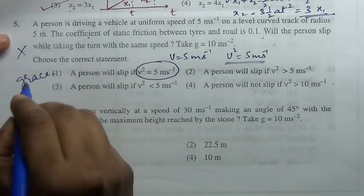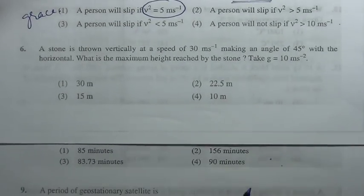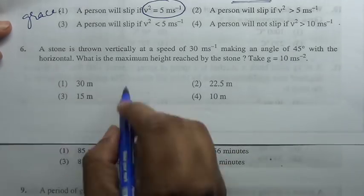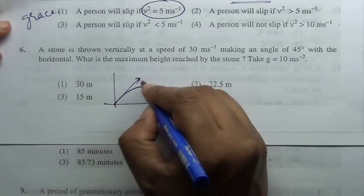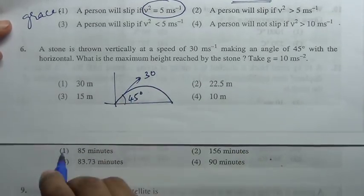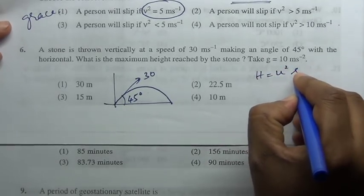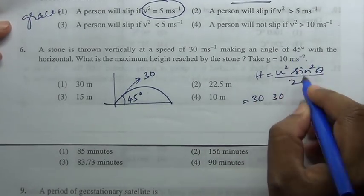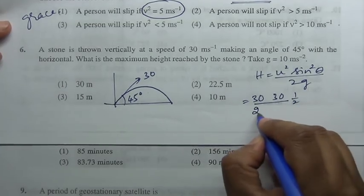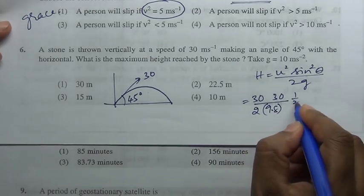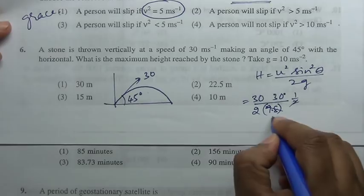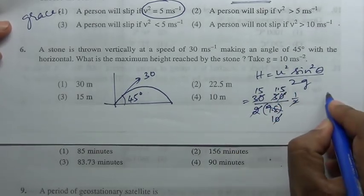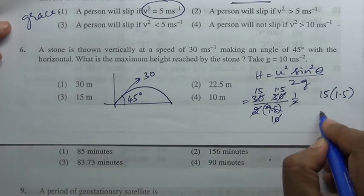A stone is thrown vertically with a speed of 30 meter per second making an angle of 45 degree with the horizontal. Projectile motion, velocity is 30, angle is 45. Height reached by the stone: height equal to u square sine square theta by 2g. u square is 30 times 30, sine 45 is 1 by root 2, square is half, by 2 into g, g is approximately 10. This is 1.5, so 15 into 1.5 is 22.5.